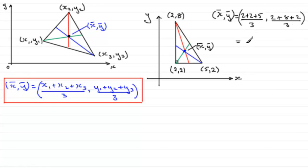So what do we get? Well, here we've got 9 divided by 3, which is 3. And here we've got 12 divided by 3, which is 4. So, this point here has coordinates (3, 4).